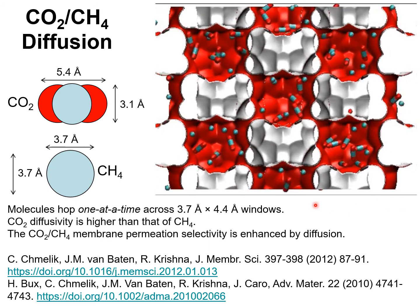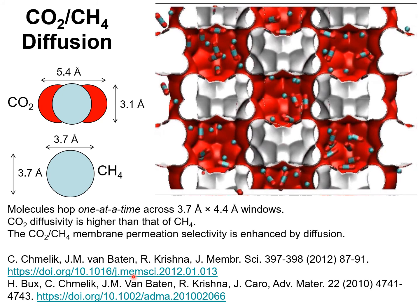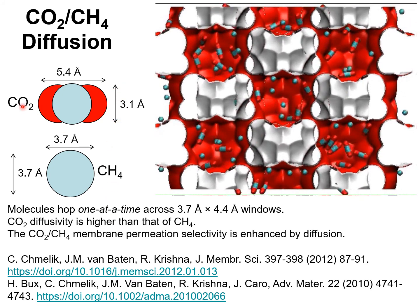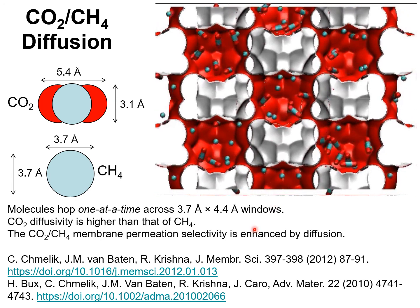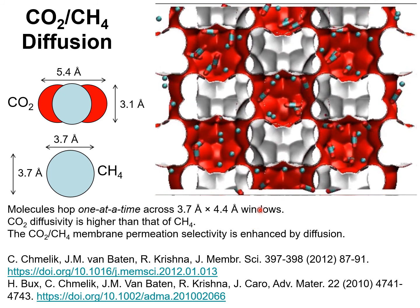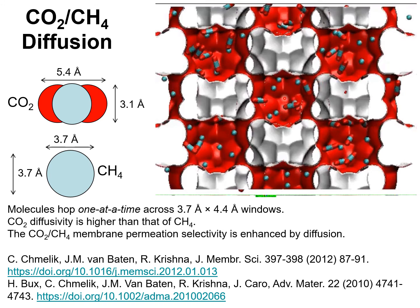A ZIF-8 membrane can also be used to separate mixtures of CO2 and methane. Due to the smaller cross-sectional dimension of CO2, its diffusivity is higher by about an order of magnitude, or maybe a couple of orders of magnitude, compared to that of methane. In this case, both adsorption selectivity and diffusion selectivity favor carbon dioxide. Experimental data confirms that the ZIF-8 membrane is effective for CO2-methane separations.